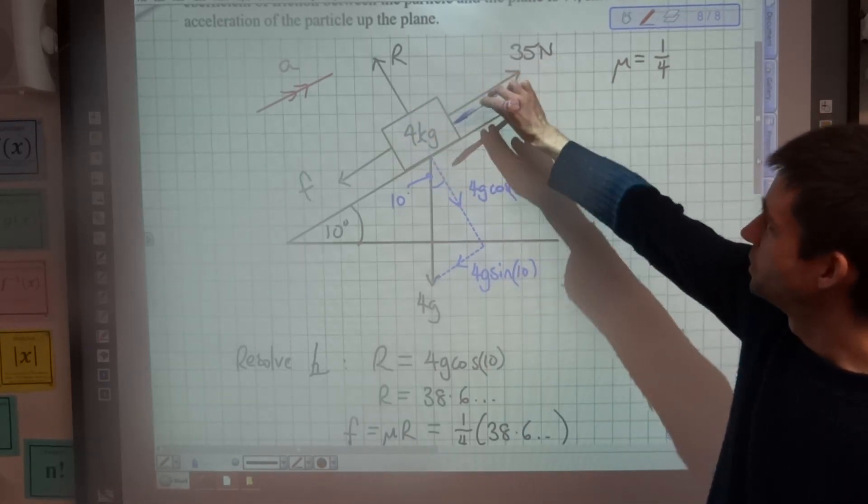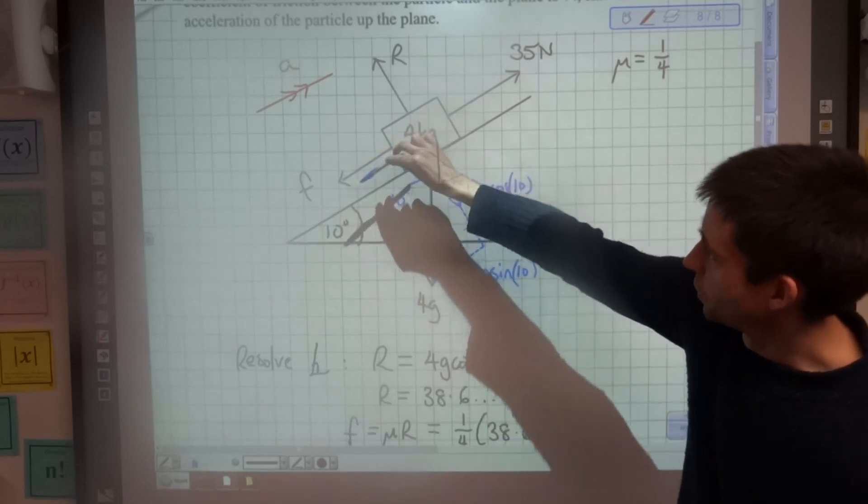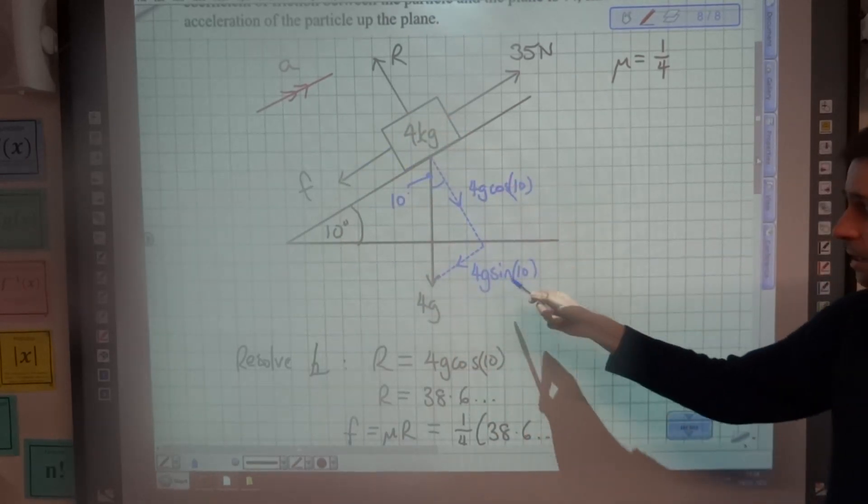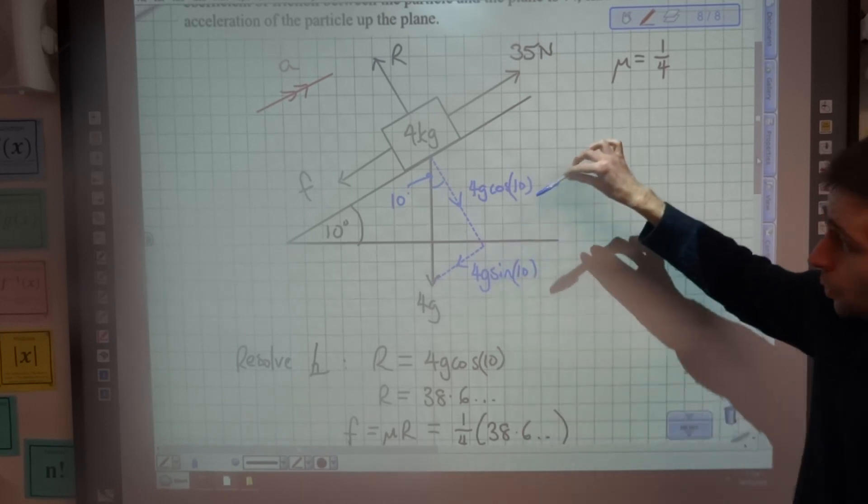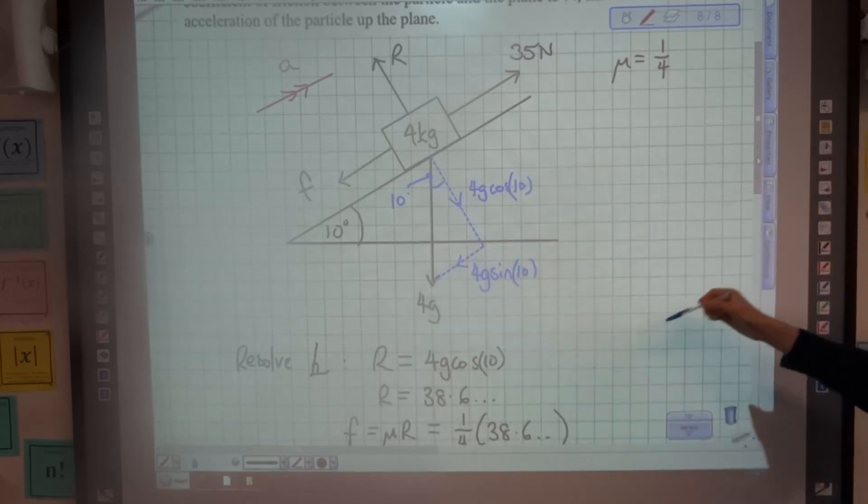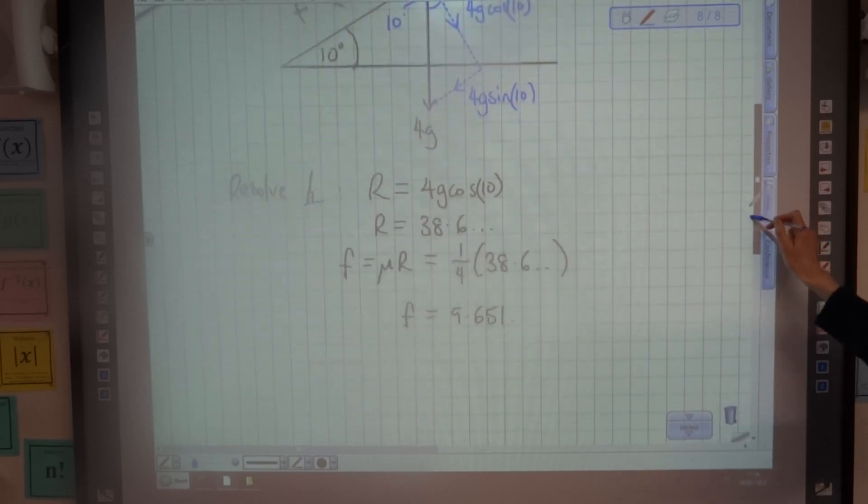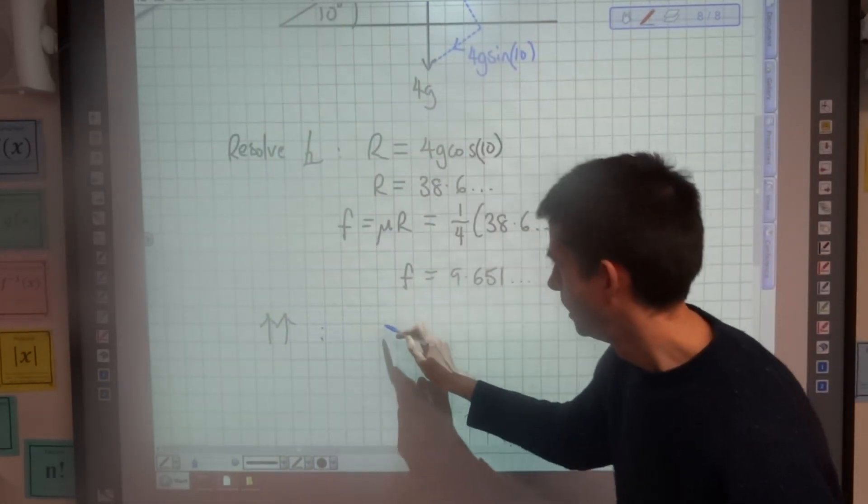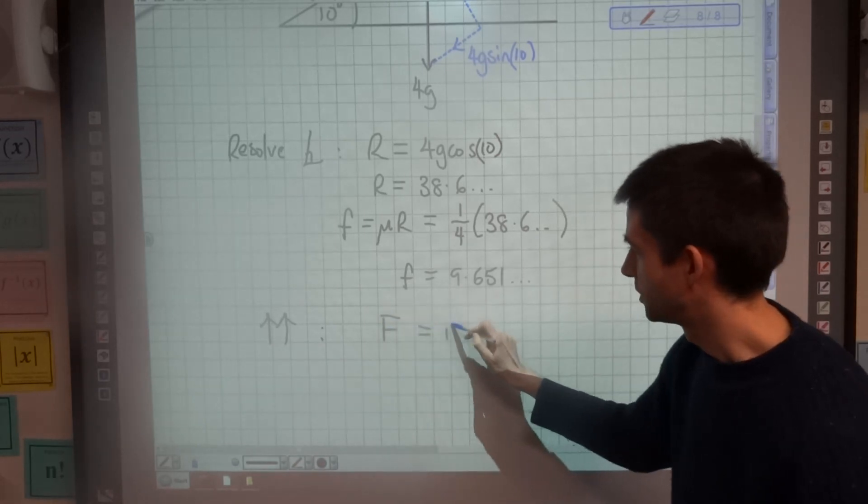I've got a 35 Newton force here, I've got a friction force here, but carry on going to the one that everyone always forgets, this 4G sin 10, which is also going down the slope here. So now when I'm doing parallel to the slope and I'm using my resultant force equals mass times acceleration...